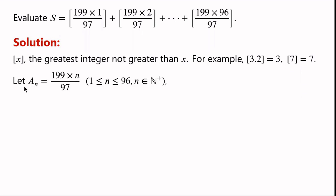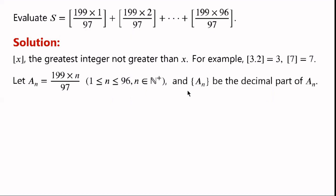Let aₙ equal 100 plus 99 times n over 97, where 1 ≤ n ≤ 96 and n is a positive natural number. Let the curly brackets {aₘ} denote the decimal (fractional) part of aₘ.